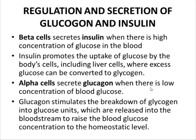So insulin is responsible for decreasing the concentration of glucose in the blood, and glucagon is responsible for increasing the concentration of glucose in the blood. When there is low concentration of glucose, the alpha cells secrete glucagon, and when there is high concentration of glucose, the beta cells secrete insulin.